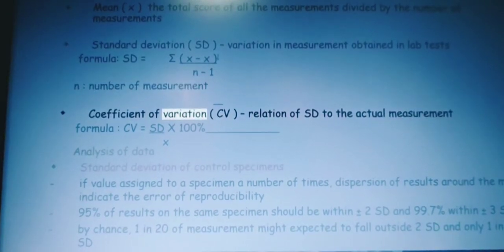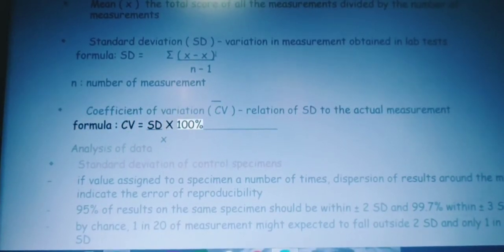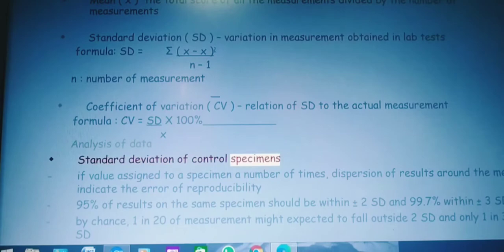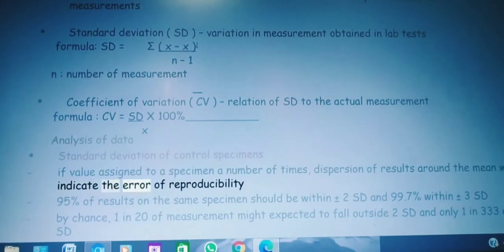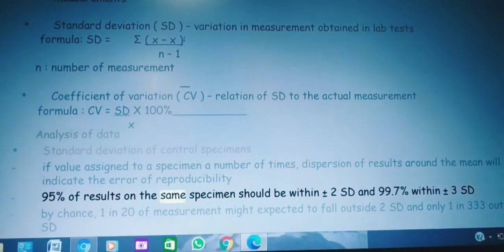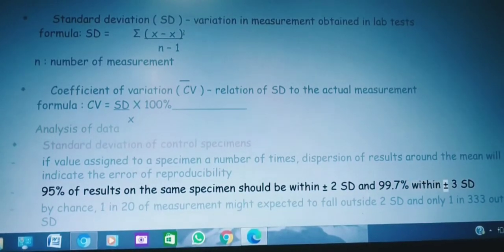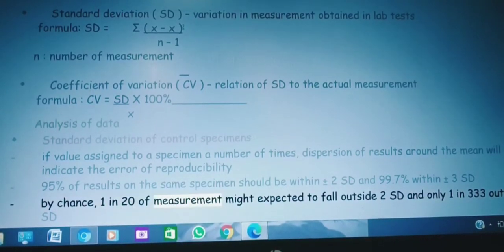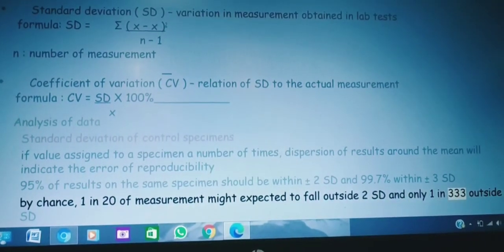Coefficient of variation CV: relation of SD to the actual measurement. Formula: CV equals SD times 100 divided by X. Analysis of data: standard deviation of control specimens. If value assigned to a specimen a number of times, dispersion of results around the mean will indicate the error of reproducibility. 95% of results on the same specimen should be within plus or minus 2 SD, and 99.7% within plus or minus 3 SD. By chance, one in 20 measurements might be expected to fall outside 2 SD, and only one in 333 outside 3 SD.